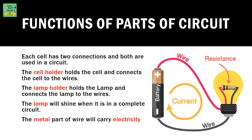Functions of parts of a circuit. Each cell has two connections and both are used in a circuit. The cell holder holds the cell and connects the cell to the wires. The lamp holder holds the lamp and connects the lamp to the wires. The lamp will shine when it is in a complete circuit. The metal part of the wire carries electricity.